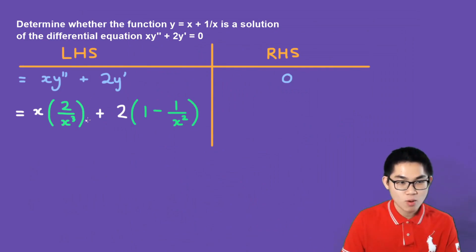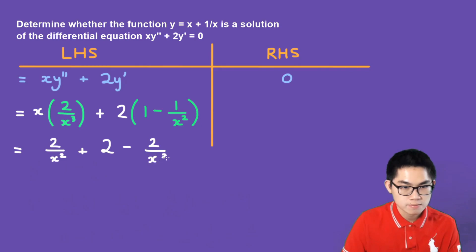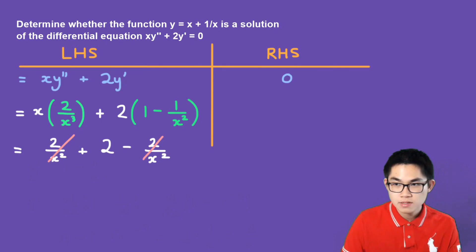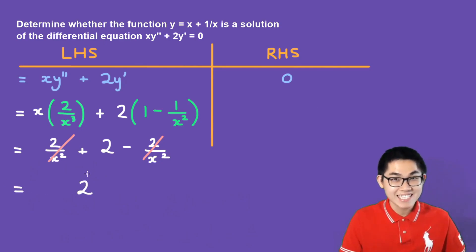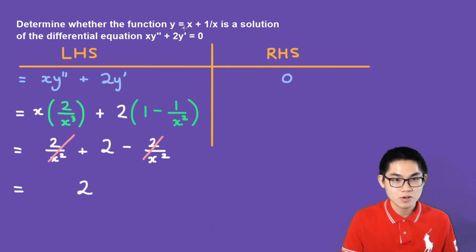Substituting y′ and y″ back into the left-hand side gives us x·(2/x³) + 2·(1 − 1/x²) = 2/x² + 2 − 2/x². The 2/x² terms cancel out, leaving 2. Because the left-hand side equals 2, not 0, the left-hand side is not the same as the right-hand side. So the answer is no — y = x + 1/x is not a solution of this differential equation.